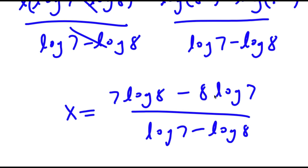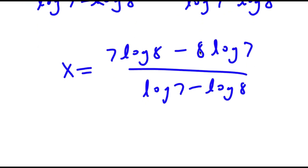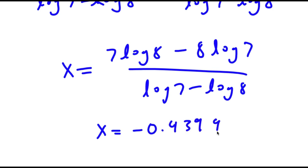From here, if you plug in all the values of log 8 and log 7 into the equation, you get x is equal to negative 0.4399.